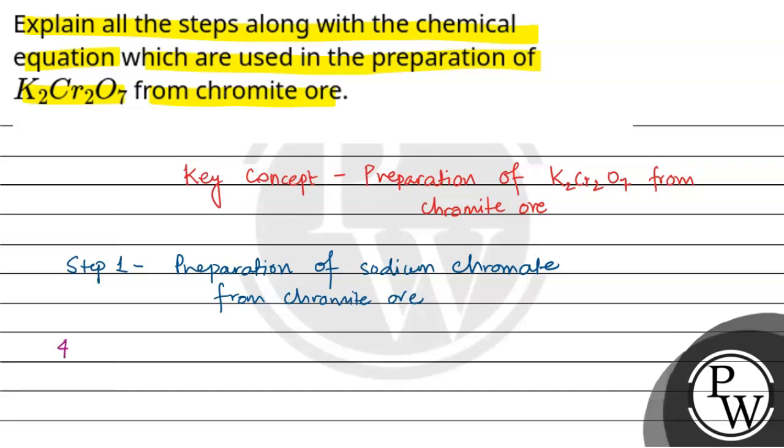The reaction is FeCr2O4 in solid form plus Na2CO3 also in solid form plus 7O2 which is gaseous. This leads to the formation of 8Na2CrO4 plus 2Fe2O3 in aqueous form plus 8 carbon dioxide gas.